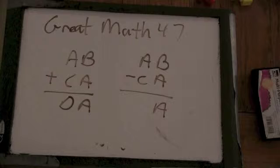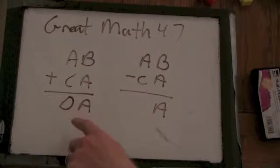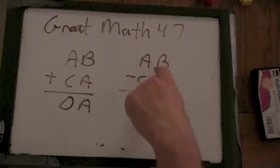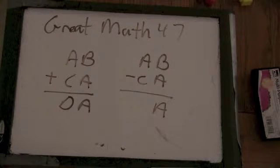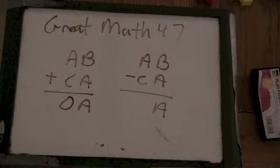And then it says the number AB plus the number CA equals the number DA. And AB minus the number CA equals A. And the question is, what is D?